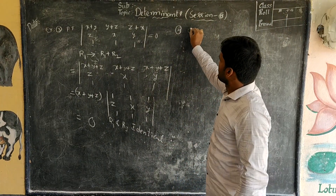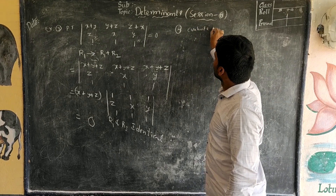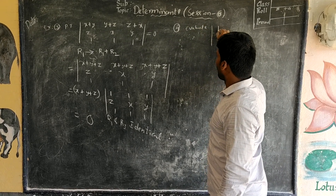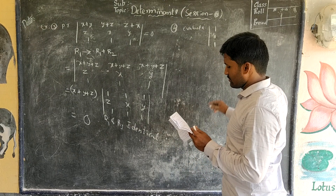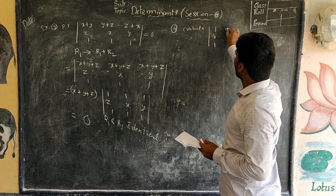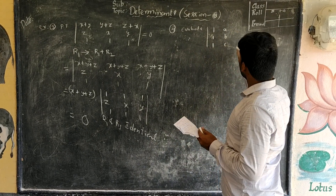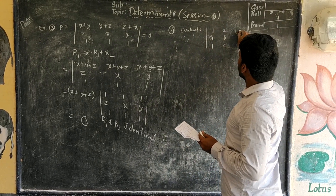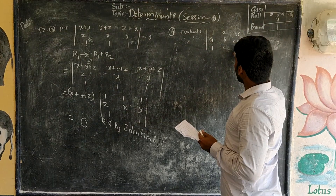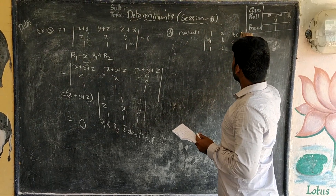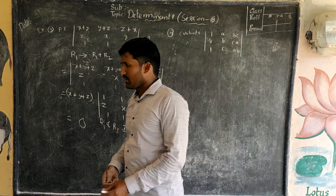Evaluate the determinant: (1, 1, 1 / a, b, c / bc, ca, ab). First column: 1, a, bc. Second column: 1, b, ca. Third column: 1, c, ab.